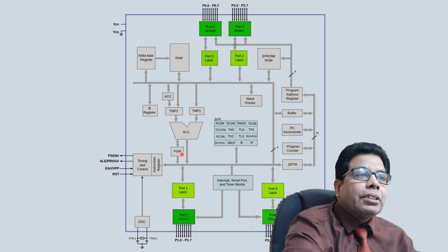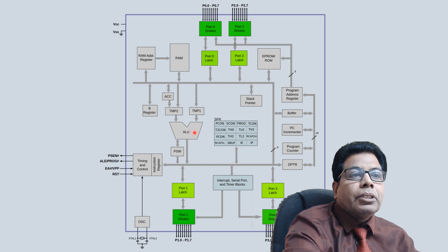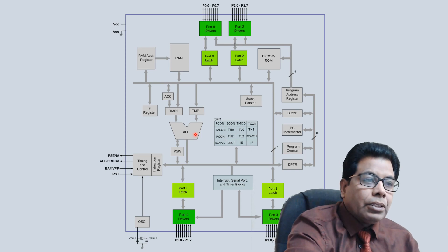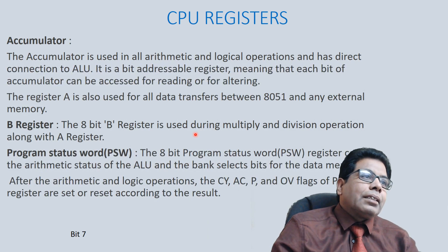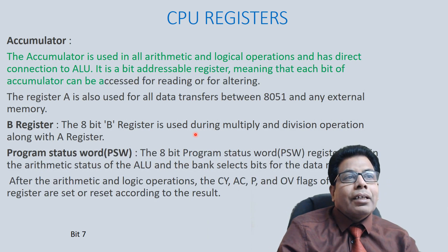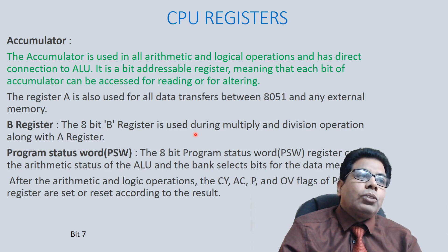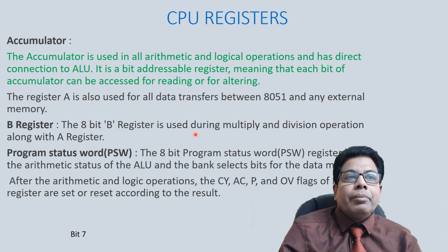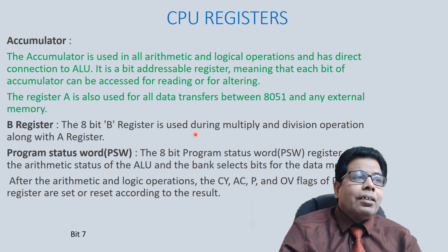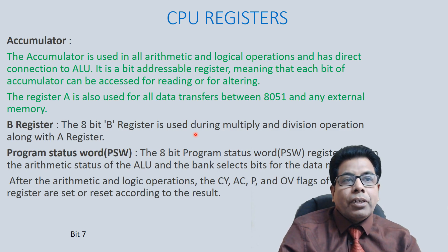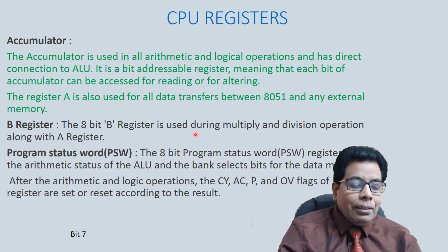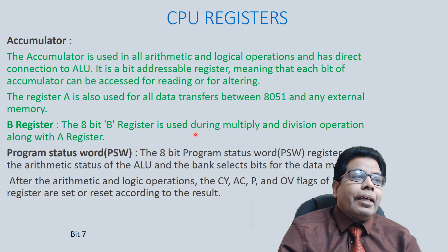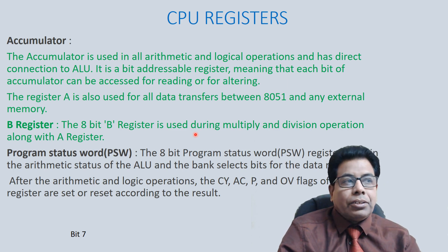The PSW (Program Status Word) and B register are used along with the ALU for arithmetic and logical operations. The accumulator is used in all arithmetic and logical operations and has a direct connection to the ALU. It is a bit-addressable register, meaning each bit can be read or altered. Register A (accumulator) is also used for all data transfers between the 8051 and external memory. Register B is an 8-bit register used during multiply and divide operations along with the accumulator.